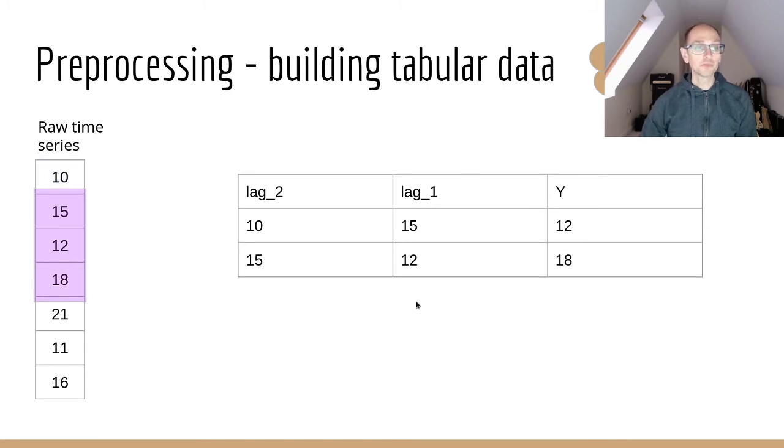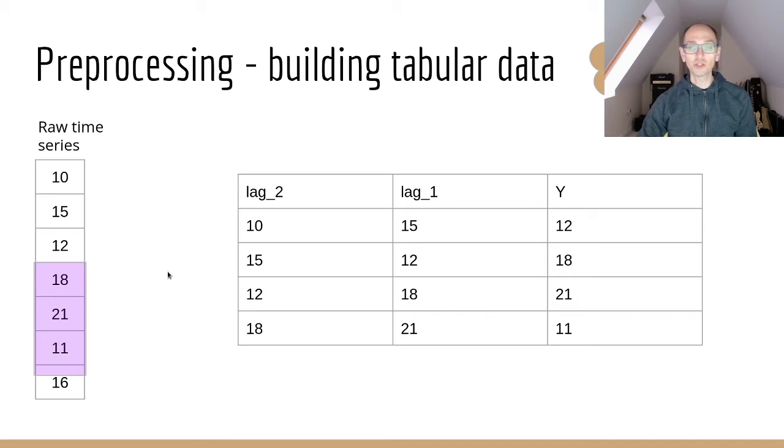Let's go to the next step and we slide that window down by one, that's called a stride. Now what we get is our lag two is 15, our lag one is 12, and our y value is 18. Let's pull that down again so we step down one more, now we have 12, 18, and 21. Let's go down one more, we have 18, 21, and 11, and then we can only do one more which is 21, 11, and 16. Really quickly we've built the training data that we will use with our neural network model.